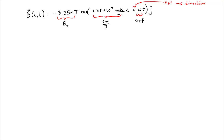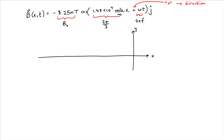Let's put this information together to come up with a sketch of our magnetic field. Our magnetic field is moving in the negative x direction, so I'm going to create a coordinate system where I have a lot of space going to the negative x direction. Here's our positive x-axis, our positive y-axis is vertical, and our z-axis is coming towards us. So this is our right-handed coordinate system.